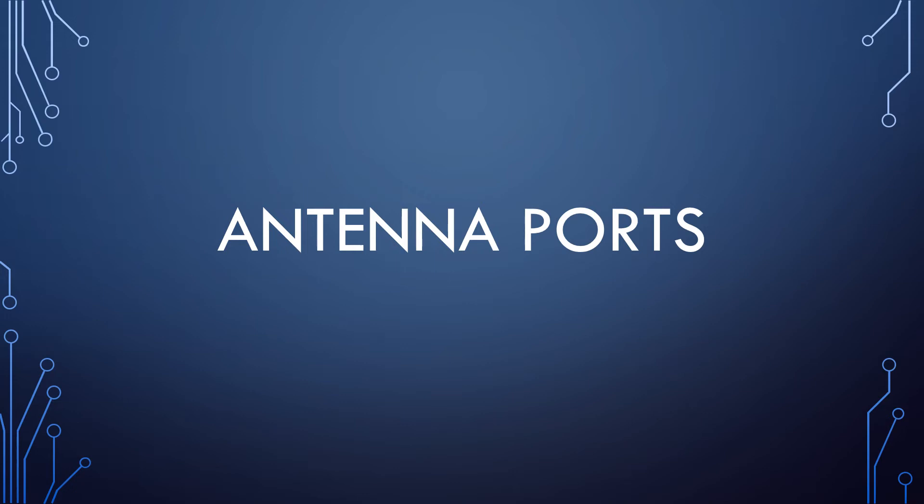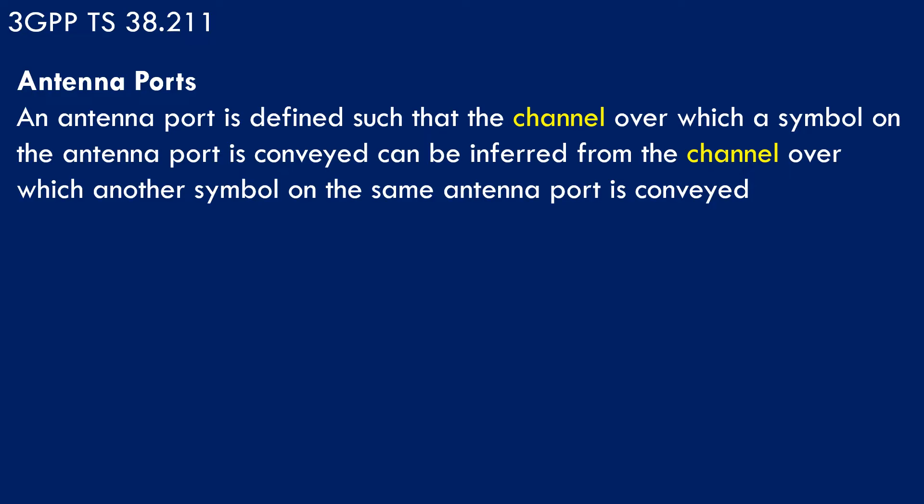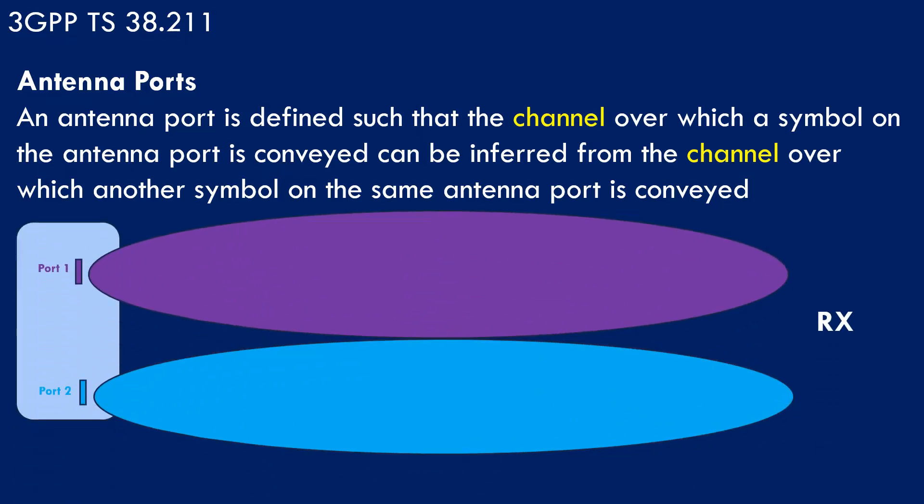Hello friends, in this video we will be discussing about antenna ports. As per 3GPP, an antenna port is defined such that the channel over which a symbol on the antenna port is conveyed can be inferred from the channel over which another symbol on the same antenna port is conveyed. Let us try to understand this with an example.